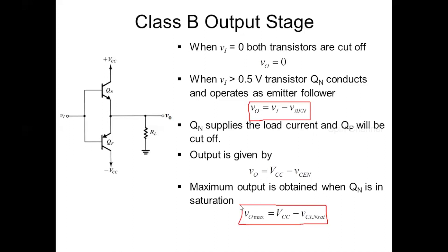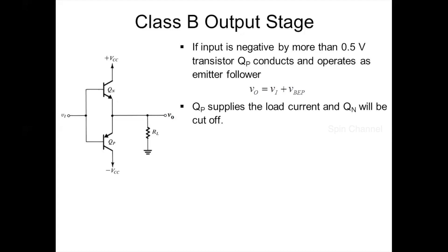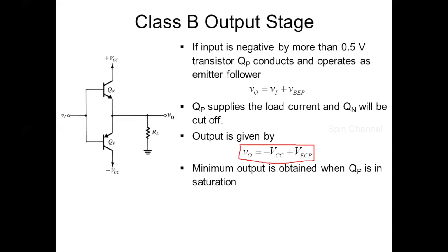Now consider if the input goes negative by more than 0.5V. In that case, QP turns on and acts as an emitter follower. From the expression, V0 equals Vi plus VBE of the PNP transistor, showing the transistor acts as an emitter follower and V0 follows Vi. QP supplies the load current and the NPN transistor is completely cut off. The output is given by V0 equals minus VCC plus VEC. The minimum output is obtained when QP is in saturation.